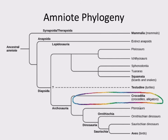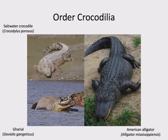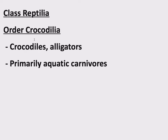Moving up the tree, Crocodilia — pretty obvious from the name. These are crocodiles, alligators, gharials, and caimans. They are primarily aquatic carnivores. That's the key information about crocodiles.